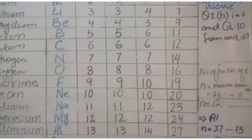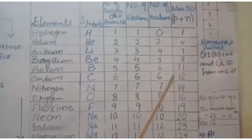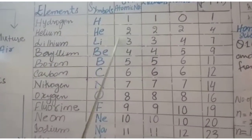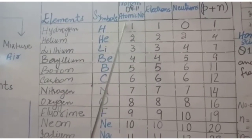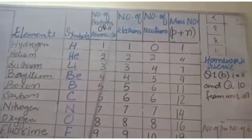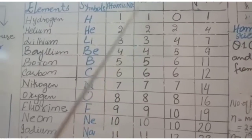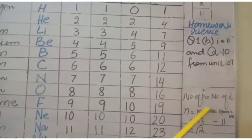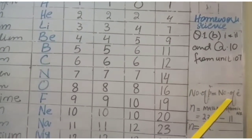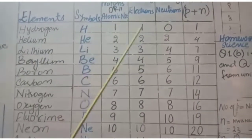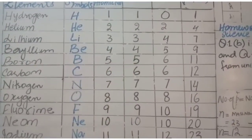Now you need to learn this table — all elements with their symbol, atomic number, number of electrons, protons, neutrons, and mass number. Don't worry — focus only on the columns: number of protons (atomic number) and mass number. Because the number of protons and number of electrons in an atom are equal — you can see: 1, 2, 3, 4, 5, 6 — the number of electrons equals the atomic number.